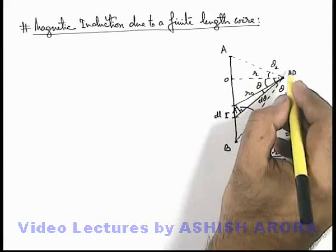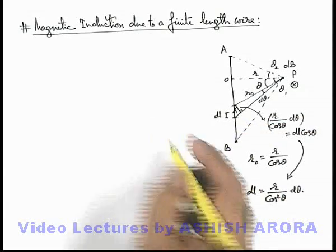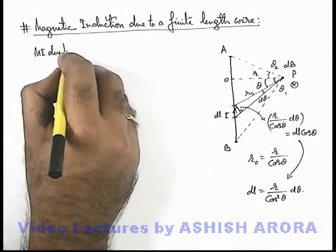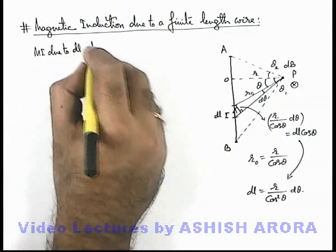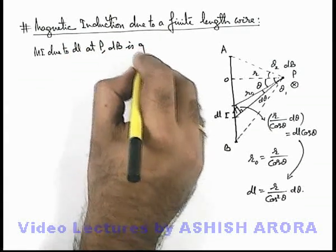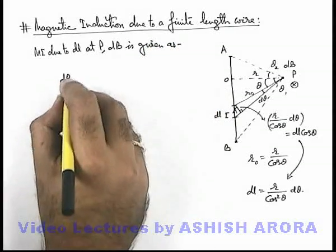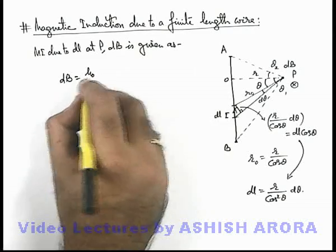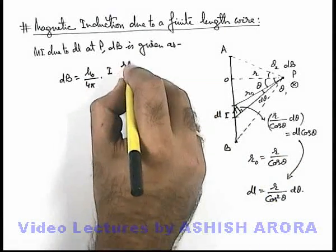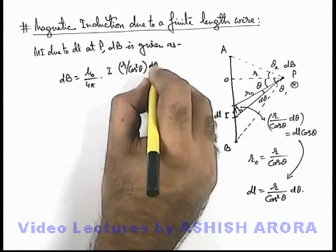If dB is the magnetic induction at point P due to this element of length dL, then we can write magnetic induction due to dL at P. dB is given as, this can be obtained by using Biot-Savart's law as dB = μ₀/4π times i dL. dL we can write as r by cos squared theta d-theta.